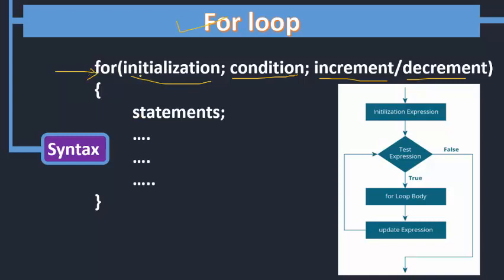In the while loop, initialization was before the loop, then the condition was checked, and within the body of the loop the increment or decrement was done. In the for loop, the flowchart is: initialization of the counter variable, then checking the condition. If the condition is true, the body of the loop is executed, and then the increment or decrement happens. After incrementing, the loop goes back to the condition check. We always have to remember that initialization happens only one time — it represents the starting value.